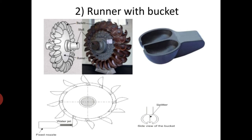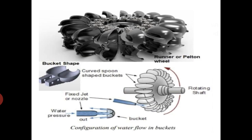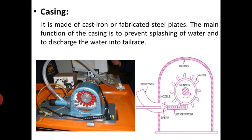The next component is the casing, which is made of cast iron or fabricated steel plates. The main function of the casing is to prevent splashing of water and to discharge the water into the tail race. It is important to note that the casing has no hydraulic function — it is just a safeguard for the turbine.